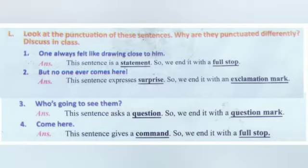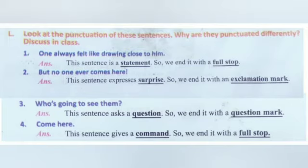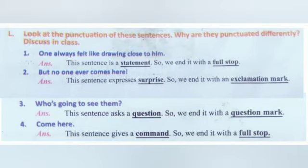Exercise L: Look at the punctuation of these sentences. Why are they punctuated differently? Discuss in class. First one: 'He always felt like drawing close to him.' — this sentence is a statement, so we end it with a full stop. Second one: 'But no one ever comes here!' — this sentence expresses surprise, so we end it with an exclamation mark. Third one: 'Who is going to see them?' — this sentence asks a question, so we end it with a question mark. Fourth one: 'Come here.' — this sentence gives a command, so we end it with a full stop.